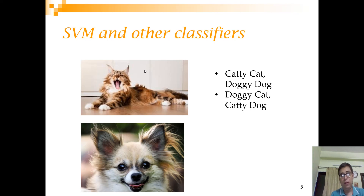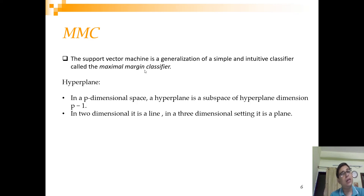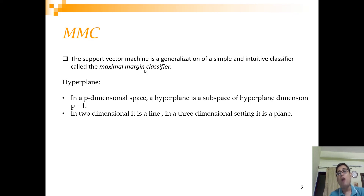This is the maximal margin classifier. Now there is a term called a hyperplane. The decision boundary in a two-dimensional feature space is a line; if I have three features, my feature space is three-dimensional, so I need a plane to bifurcate into two regions. More generally, in p dimensions I need a plane of p minus one dimensions — such a thing is called a hyperplane.